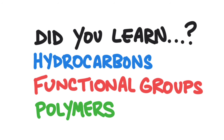So did you learn everything in this video? If you did, you learned that hydrocarbons are molecules composed only of carbon and hydrogen atoms, and hydrocarbons make up the backbone of organic molecules. You also learned that functional groups give function to the organic molecules, and you learned about five different functional groups: hydroxyl, carbonyl, carboxyl, amino, and phosphate. Finally, you learned that biological molecules are huge molecules called polymers, and polymers are formed from monomers through dehydration reactions. The opposite of a dehydration reaction is called hydrolysis, which unlinks polymers to form monomers.